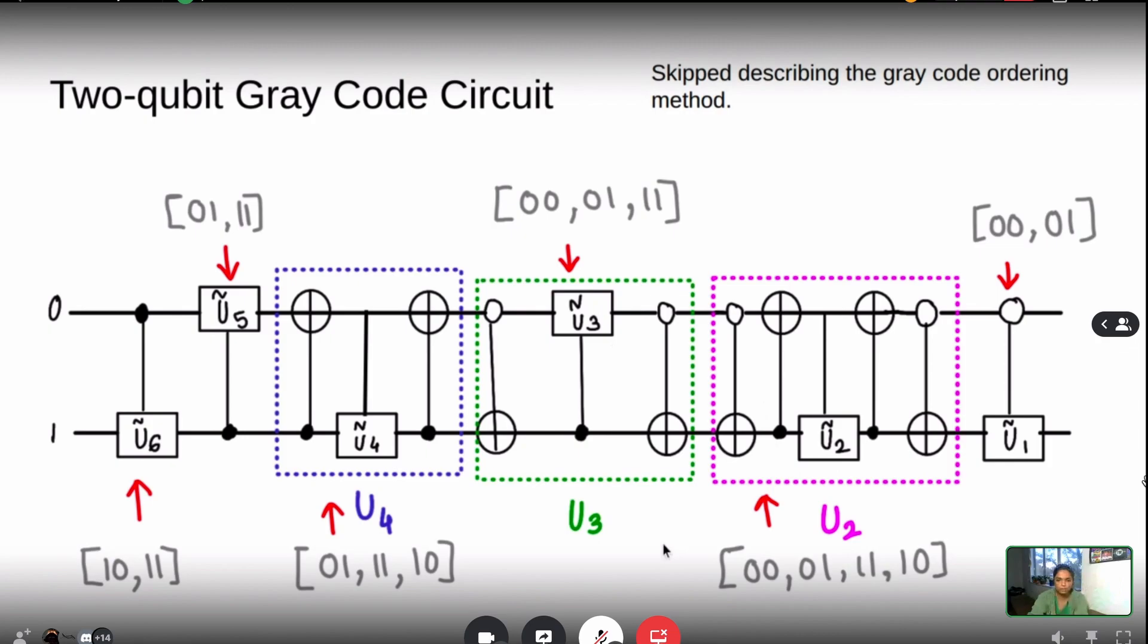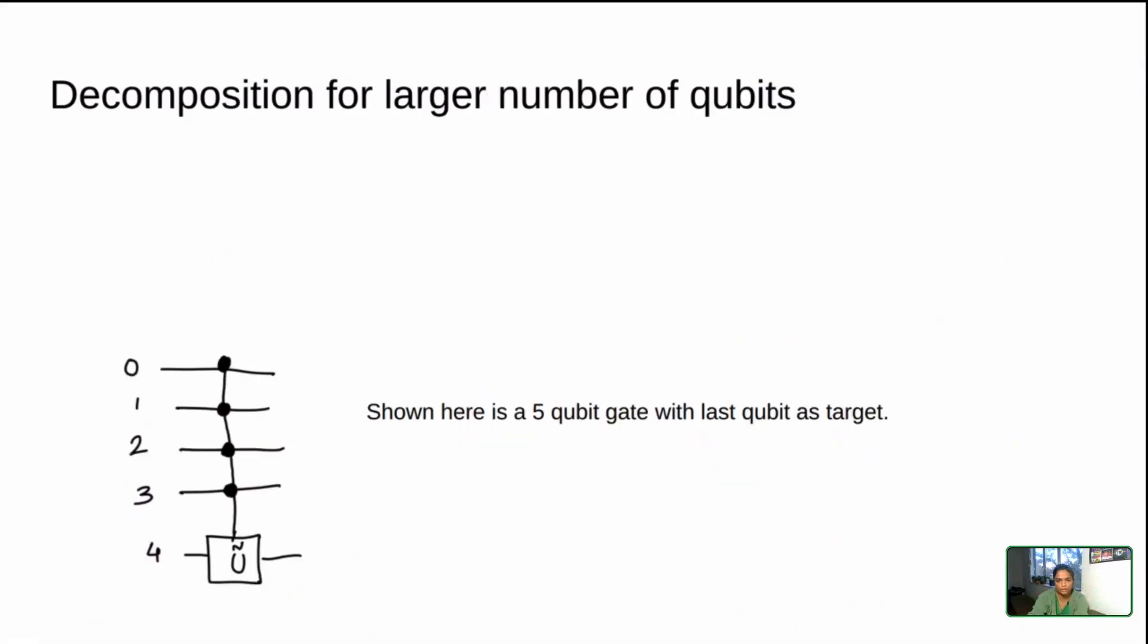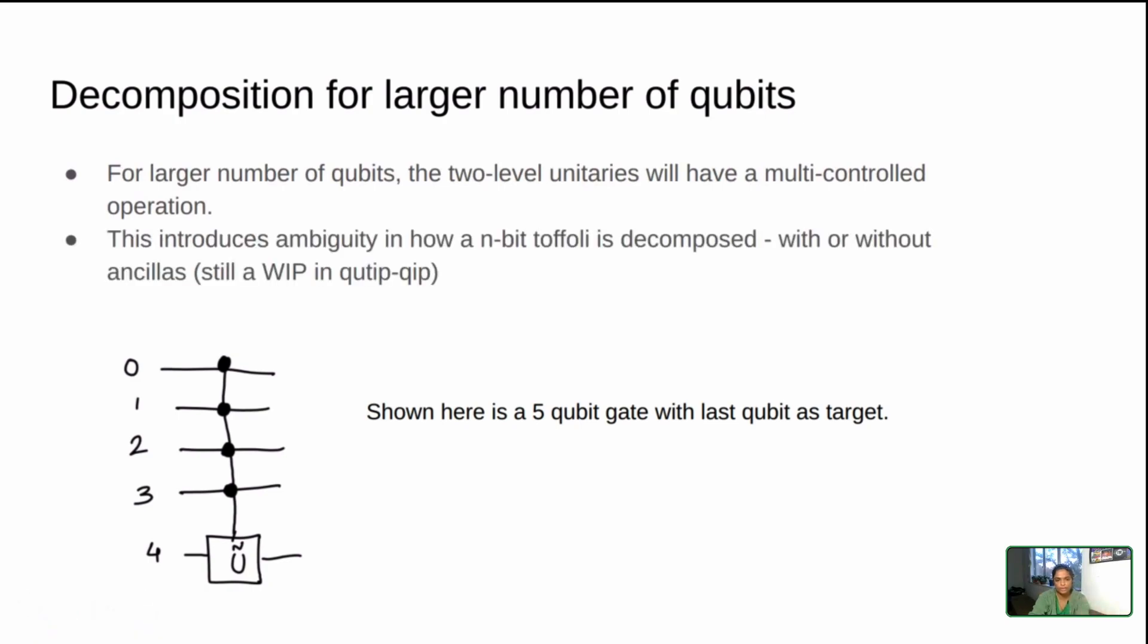For a larger number of qubits, you also have to think about decomposing with Toffoli. Here it's a five qubit gate, or a five qubit two level gate, where those four are the controls and the last gate is the target. The issue with this is when I decompose it, there are two possibilities. I can decompose it using ancillas or without ancillas, and you have to think about how the Toffoli or the n-bit Toffoli gets decomposed as well.